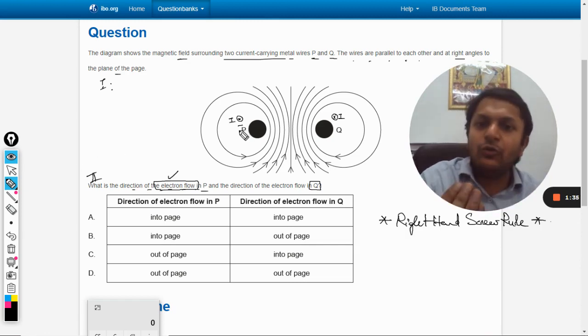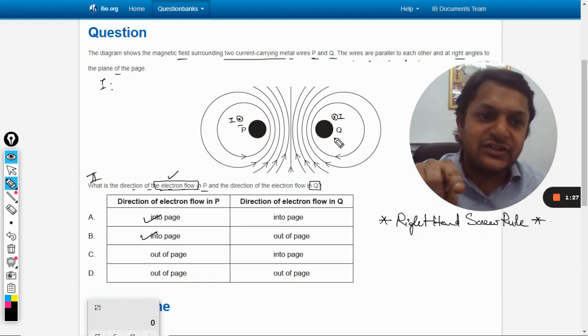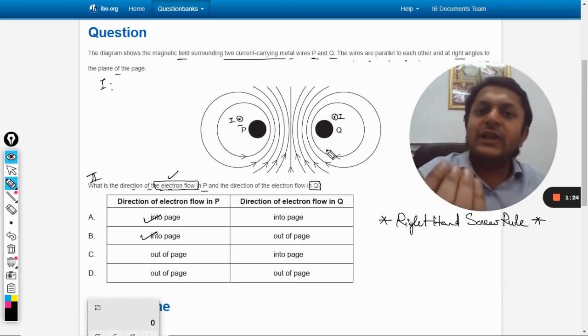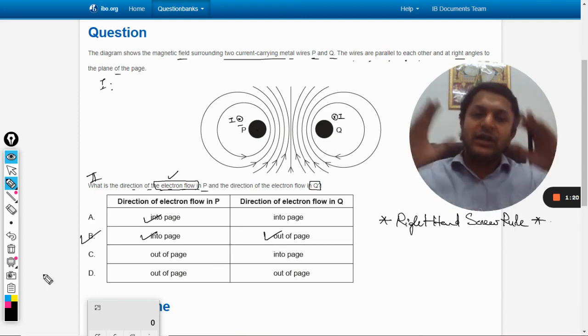So this is coming out, so electrons are going into P, into the page. And for Q, because the conventional current, that is the direction of the positive charge, is into the plane, so electron is coming out of the page. So our answer is P.